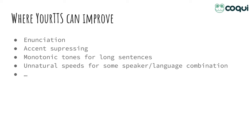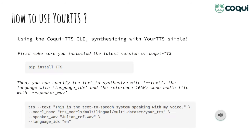This leaves a lot to improve, and we have plenty of ideas — this is a work in progress. How can you try Your TTS? It's really simple using the Coqui TTS CLI. Just make sure you have the latest version of Coqui TTS installed — you can do pip install TTS. Then using the TTS command, you can specify the text, the language with language ID, and the reference file for the speaker embedding using speaker-wav. And it should sound like this: [Audio demo: 'This is the text-to-speech system speaking with my voice.']